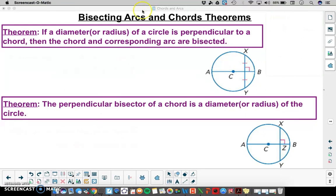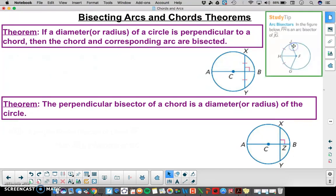The next two theorems have to do with bisecting arcs and chords. Let's take a look at what bisecting an arc looks like. In this diagram here, this segment FH bisects the chord GJ. So we can see here arc JH and HG are congruent. So we would say FH is an arc bisector.